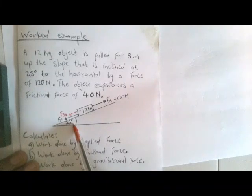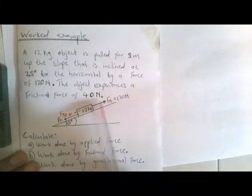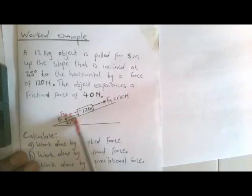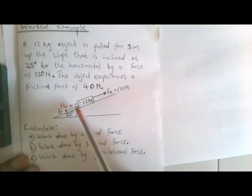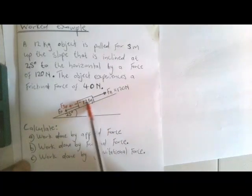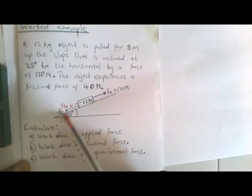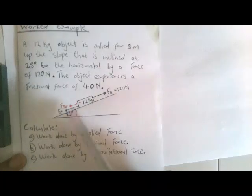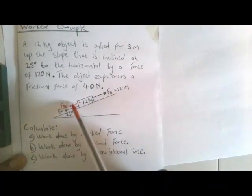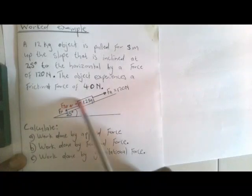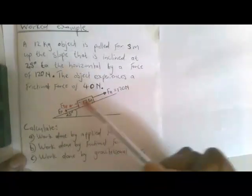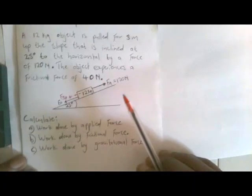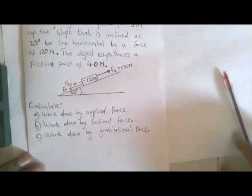The frictional force opposes the motion of the object, so since the object moves up the slope, the frictional force acts down the slope. Since it is on an inclined plane, we also have FG parallel pulling down the slope.